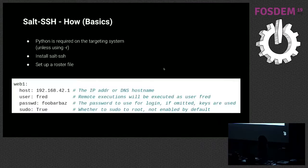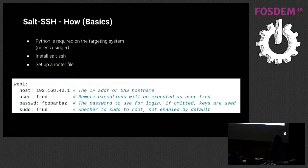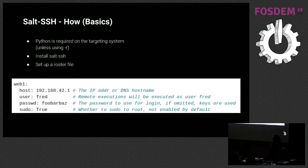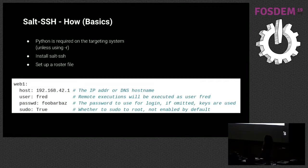To get Salt SSH up and running, Python needs to be on the target system unless you use the -r argument, which just runs a raw SSH command without the full power of Salt. You also need to install Salt SSH and set up a roster file. An example flat roster file is pretty simple: web1 is an arbitrary name, host is the IP address or DNS hostname, user and password for authentication, and sudo if the user needs sudo privileges.